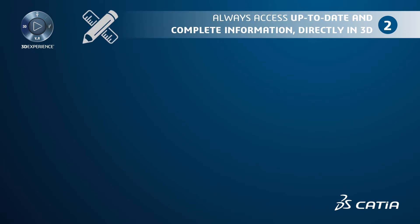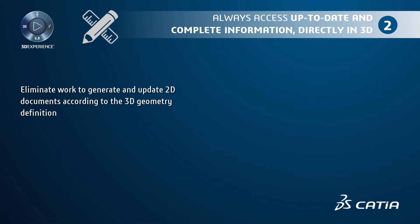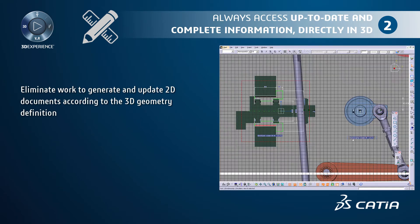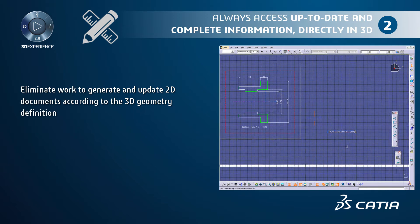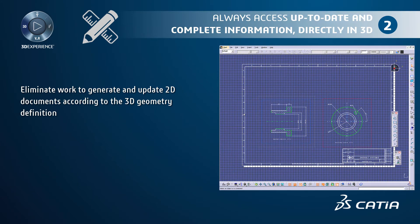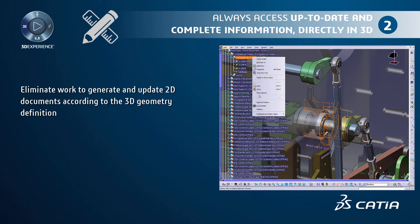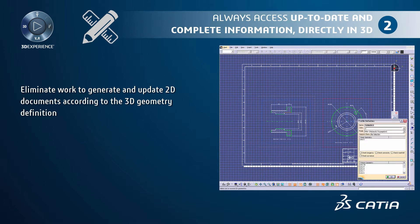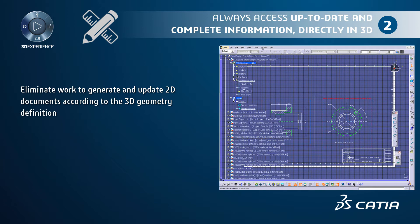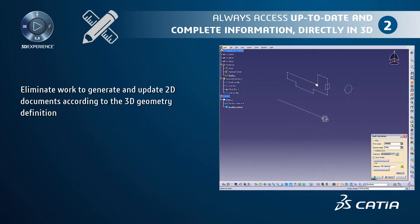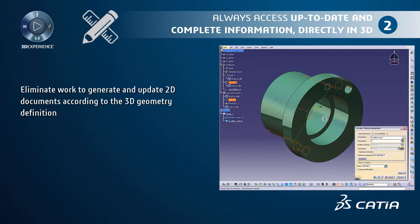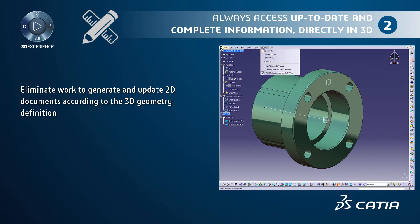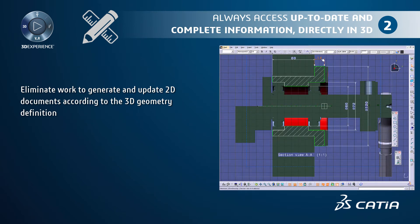Access the right and complete information directly in 3D and eliminate work to generate and update 2D documents according to the 3D geometry definition. You can define 100% of product definition in one single source with associativity between 2D layouts and 3D master. With 2D layout for 3D design, you work in a 3D environment with embedded 2D drafting capabilities in a familiar drafting workbench with multi-view capabilities. You can create layout views containing geometry, dimensions, annotation, dress-up, 2D components, and constraints. This is well adapted to both 2D and 3D oriented users, and provides an intuitive environment to capture design intent.